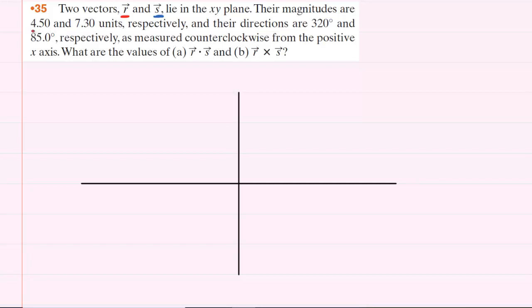We can see that vector r has a magnitude of 4.5 and a direction of 320 degrees measured counterclockwise from the positive x-axis. So our positive x-axis is located right here.